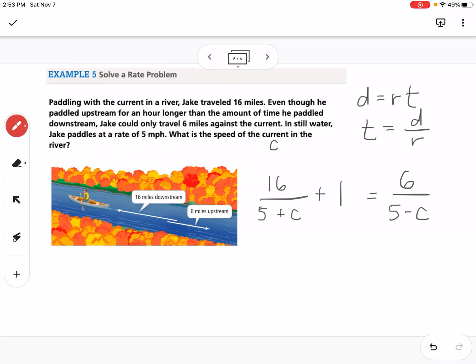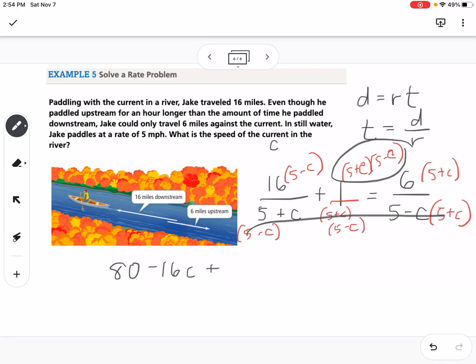So let's use a different color here. So my common denominator, let's make it 5 plus C times 5 minus C. So this one needs a 5 plus C. This one needs both. And this one needs a 5 minus C. So I'm going to distribute here. So I have 16 times 5 would be 80, and I can cross off my denominator because they're all the same. So 80 minus 16C plus, I'm going to foil these, and they're a difference of two squares, so it's just going to be plus 25 minus C squared equals 30 plus 6C.